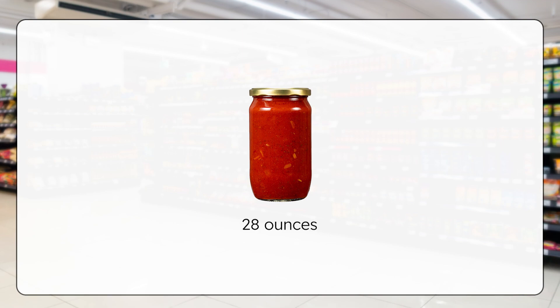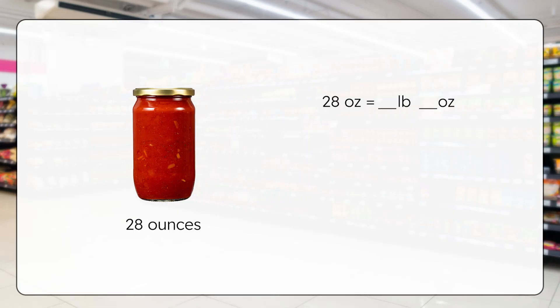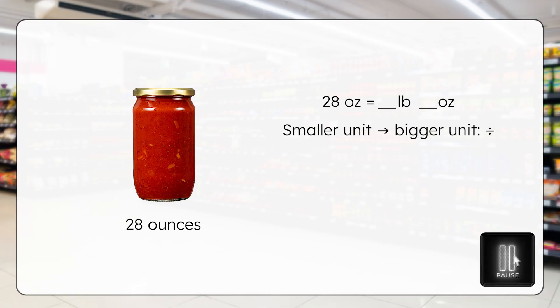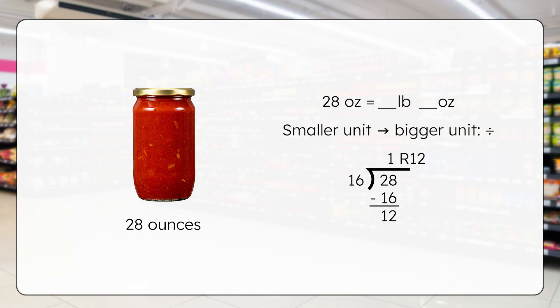Now try going the other way — converting ounces to a mixed unit with pounds and ounces. This jar of tomato sauce weighs 28 ounces. How many pounds is that? You may have ounces left over. To go from a smaller unit to a bigger unit, we divide. Pause here to figure it out in your guided notes. To convert ounces to pounds, divide by 16. 28 divided by 16 equals 1 pound with a remainder of 12 ounces. So 28 ounces is equal to 1 pound and 12 ounces. Generally, anything over 16 ounces is converted to pounds or displayed with pounds and ounces.